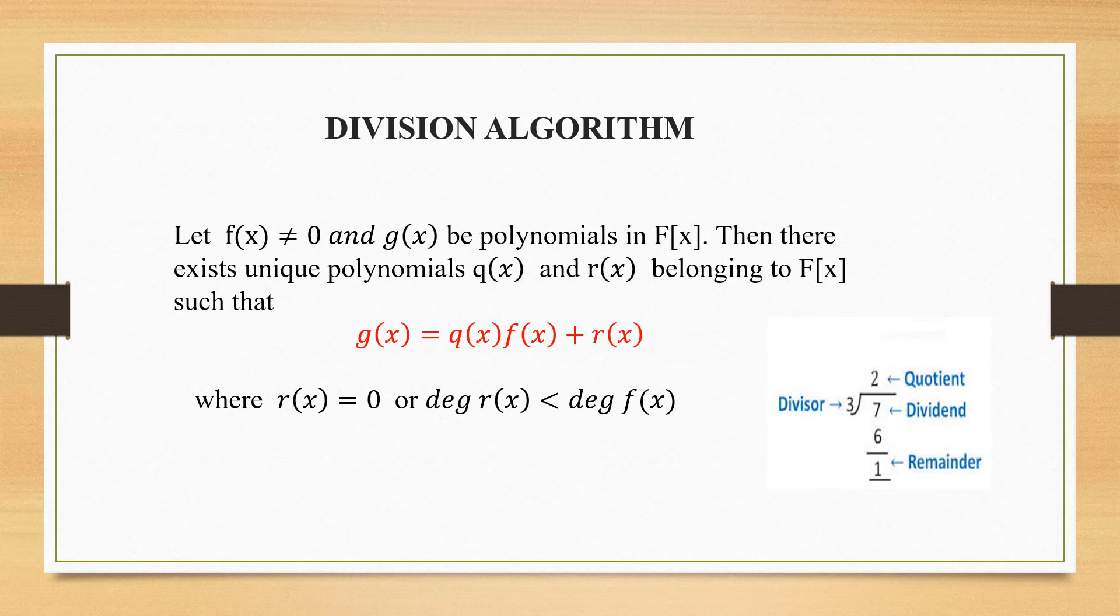By looking at this itself, you could clearly say that q(x) will denote quotient and r(x) will denote the remainder, belonging to F[x] such that g(x) equals q(x) times f(x) plus r(x).